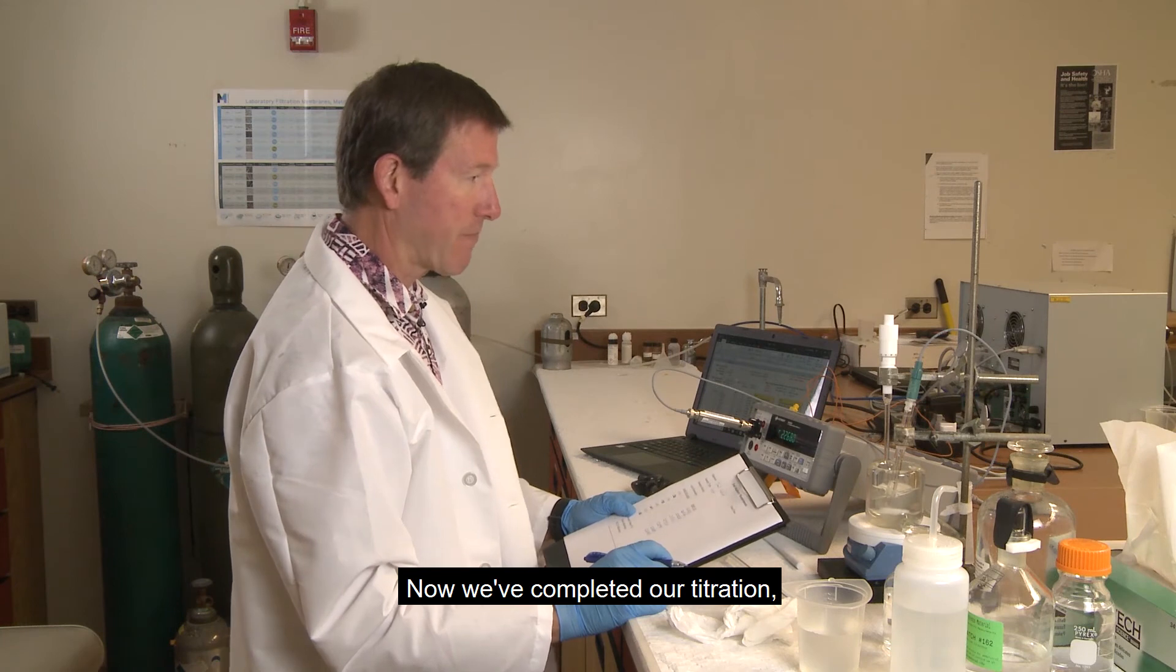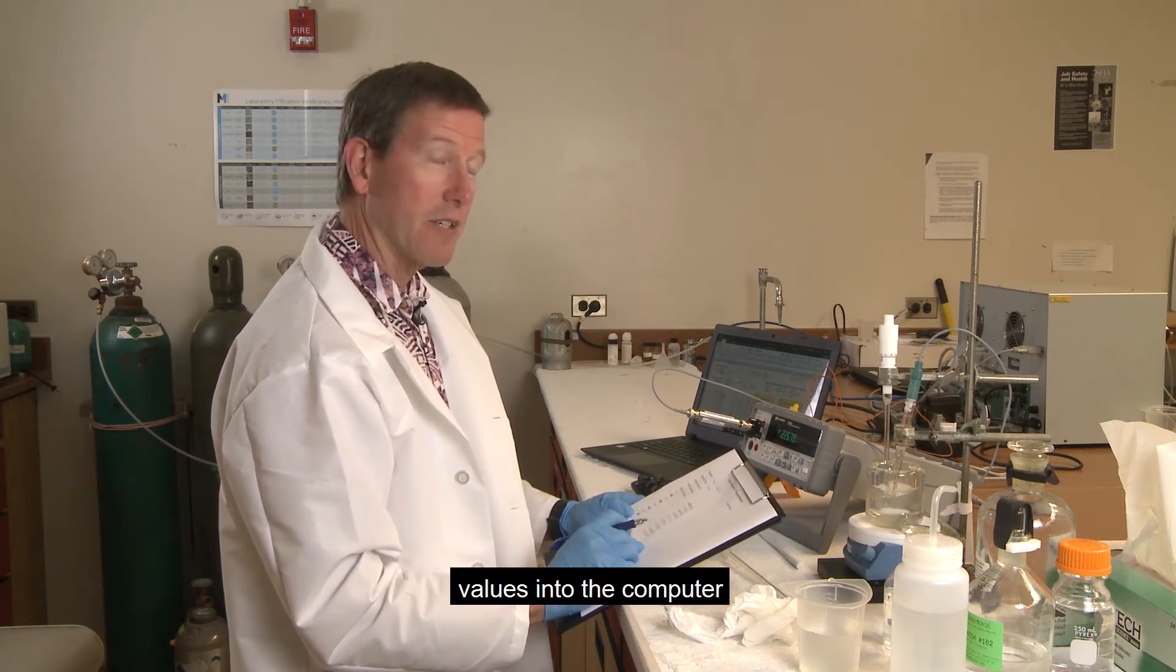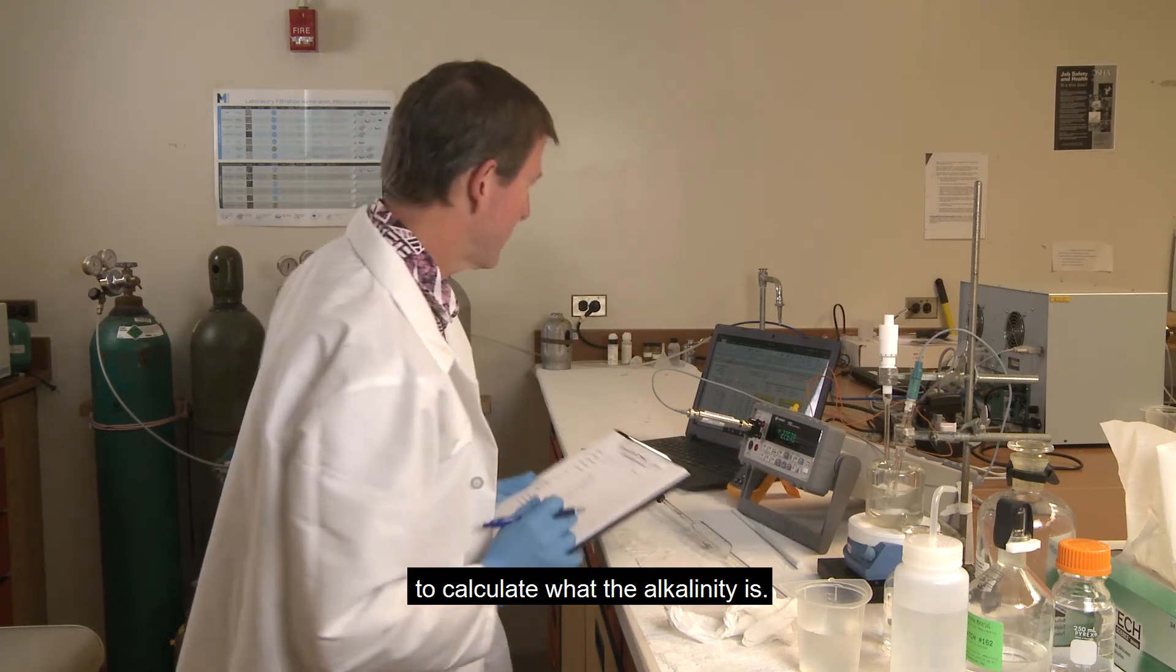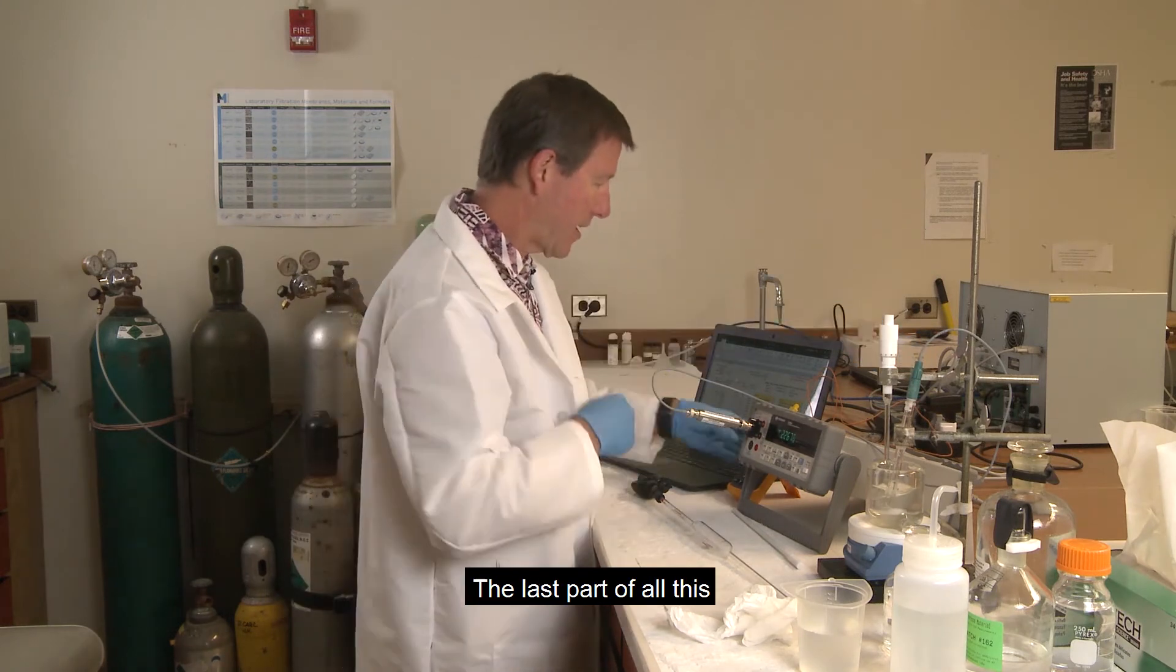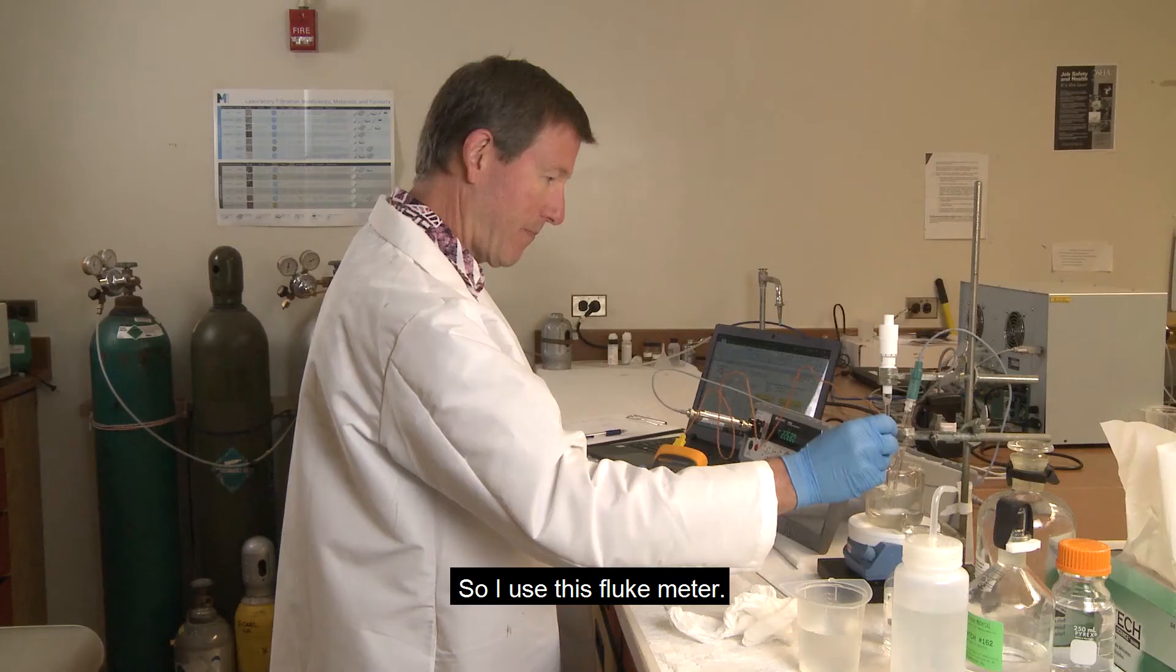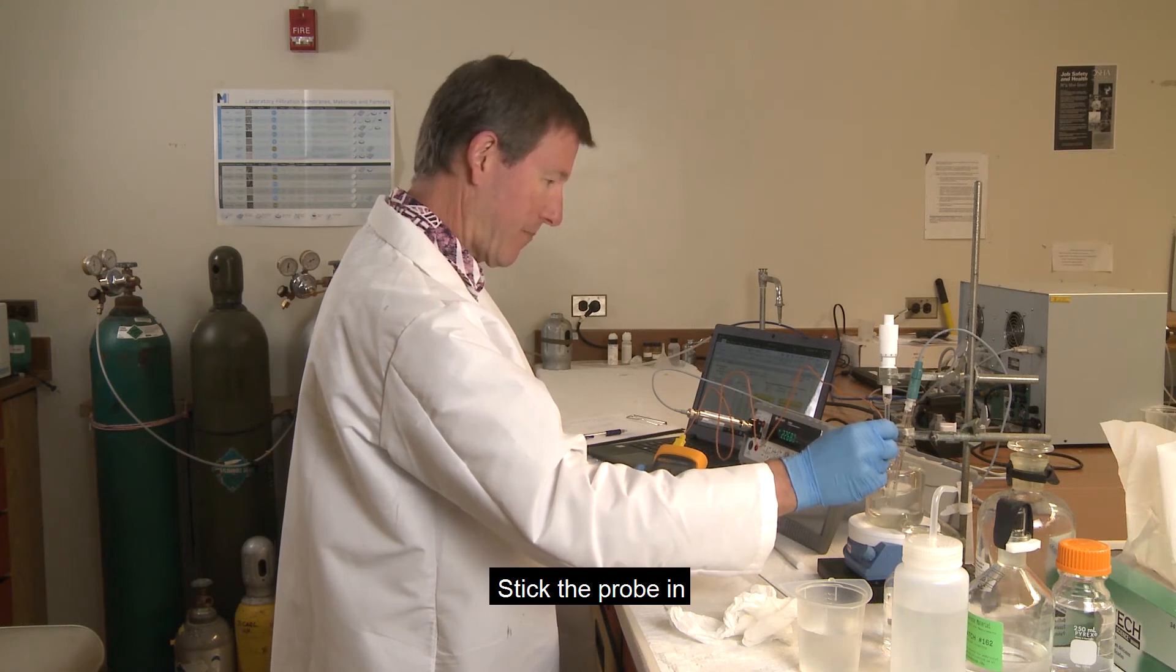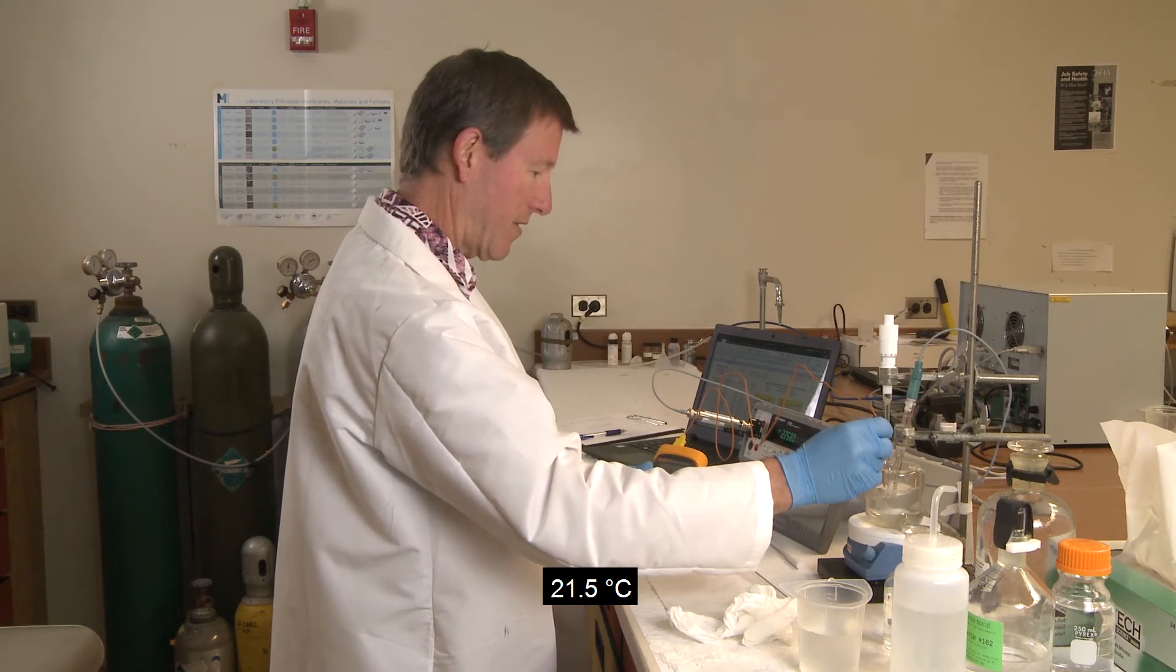Now we've completed our titration and we can enter these values into the computer to calculate what the alkalinity is. But one last thing before we do that. The last part of all this is you want to read the temperature. So I use this fluke meter, stick the probe in, and record the temperature, 21.5 degrees Celsius.